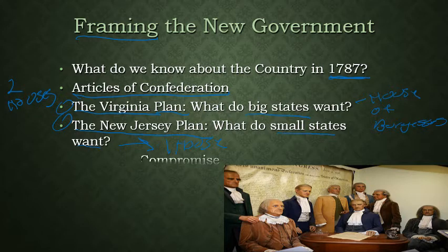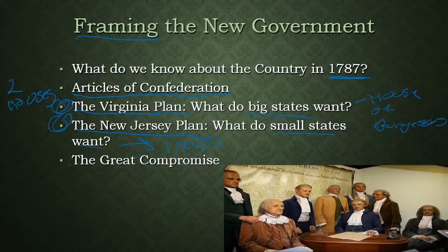When you put it all together, what happens is ultimately something known as the Great Compromise. The Great Compromise is how we end up with what we have today: an upper house, the Senate, with equal representation for each state, and a lower house, the House of Representatives, based on population. The upper house has two senators per state; the lower house is based on varying numbers of representatives.